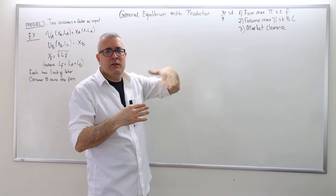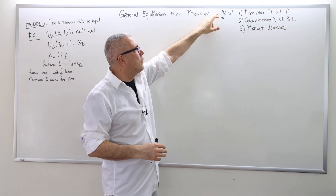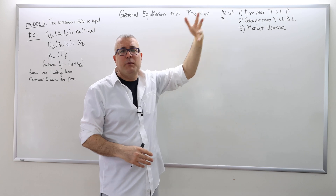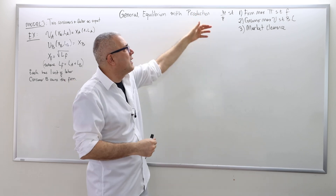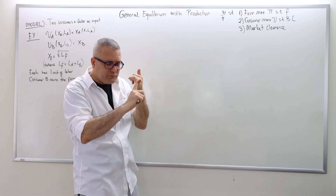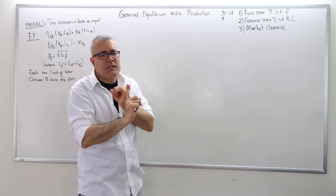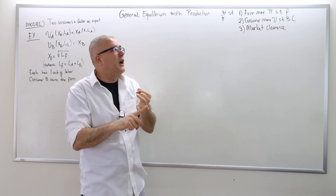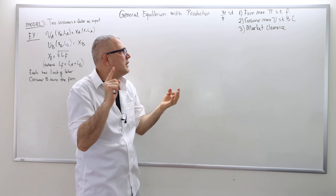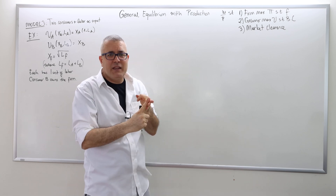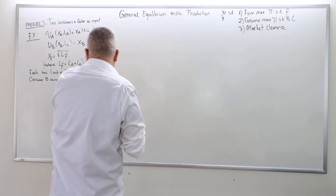So what is the methodology? We are looking for W divided by P — where W is the wage and P is the price for good X — such that the firm chooses its supply optimally, the consumers choose their demand optimally, and the market clears with no excess demand and no excess supply.